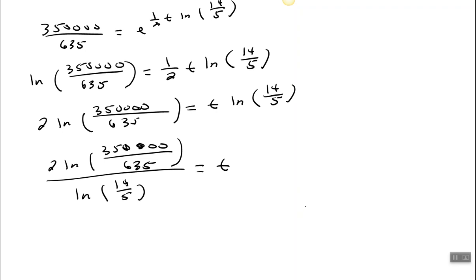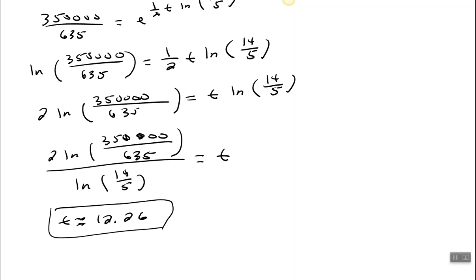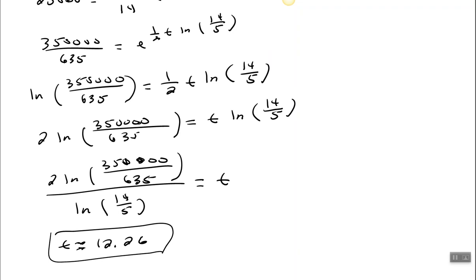Putting that all into the calculator gives approximately T = 12.26. So after 12.26 hours the population would reach 25,000 bacteria. Alright, good people, I hope you found this video to be helpful. Thank you.